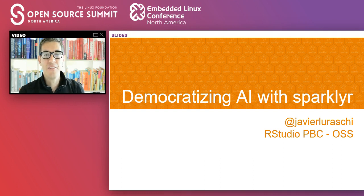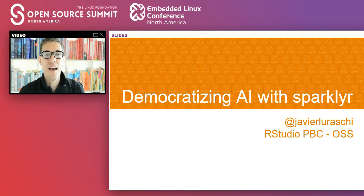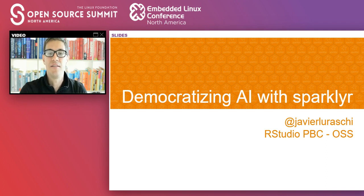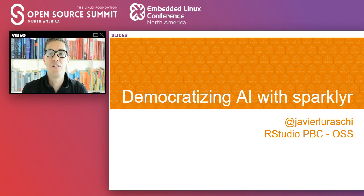Hi everyone, and welcome to another session in the Open Source Summit. My name is Javier Luraski. I'm a software engineer at RStudio. In this talk, we're going to talk about a new project on the LFAI Foundation called SparklyR, which can help you democratize AI with really useful tools like Apache Spark and similar tools in the community. I'm really excited for this talk because we usually don't get to talk about the R community and open source projects with the broader open source community.